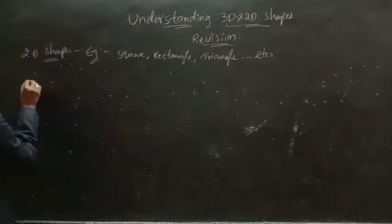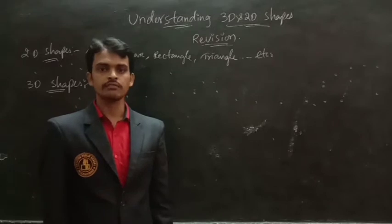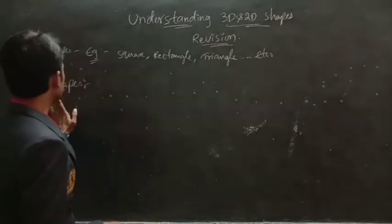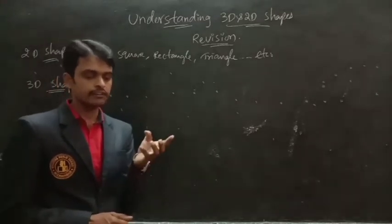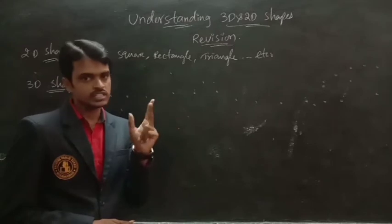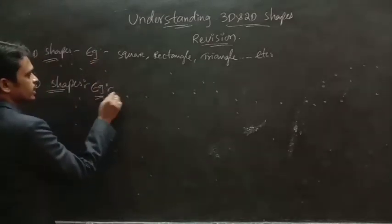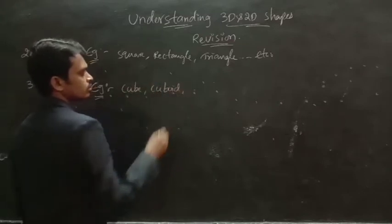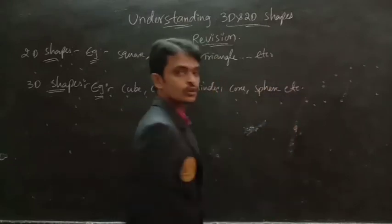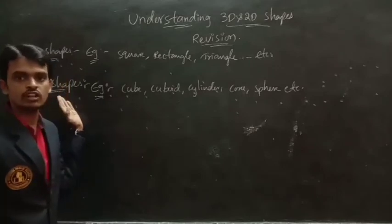Now, 3D shapes. Objects which have three dimensions — length, breadth, and height or depth — are called 3D shapes. Height and depth are both the same. Examples of 3D shapes: cube, cuboid, cylinder, cone, sphere, etc. These are all the 3D shapes.